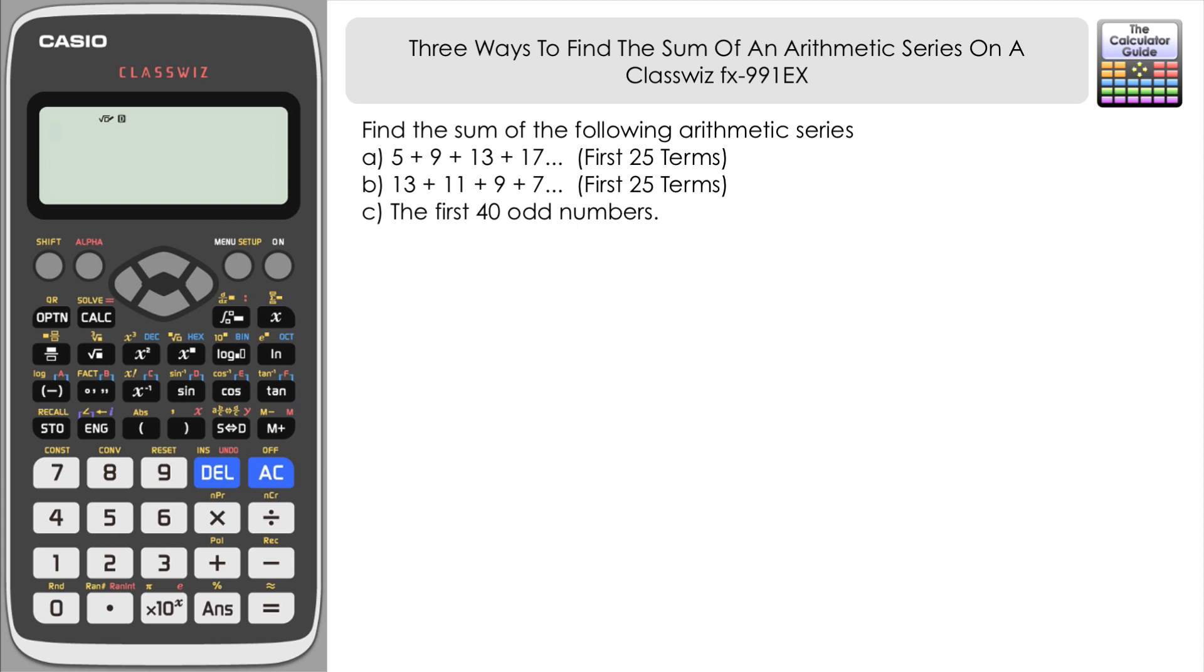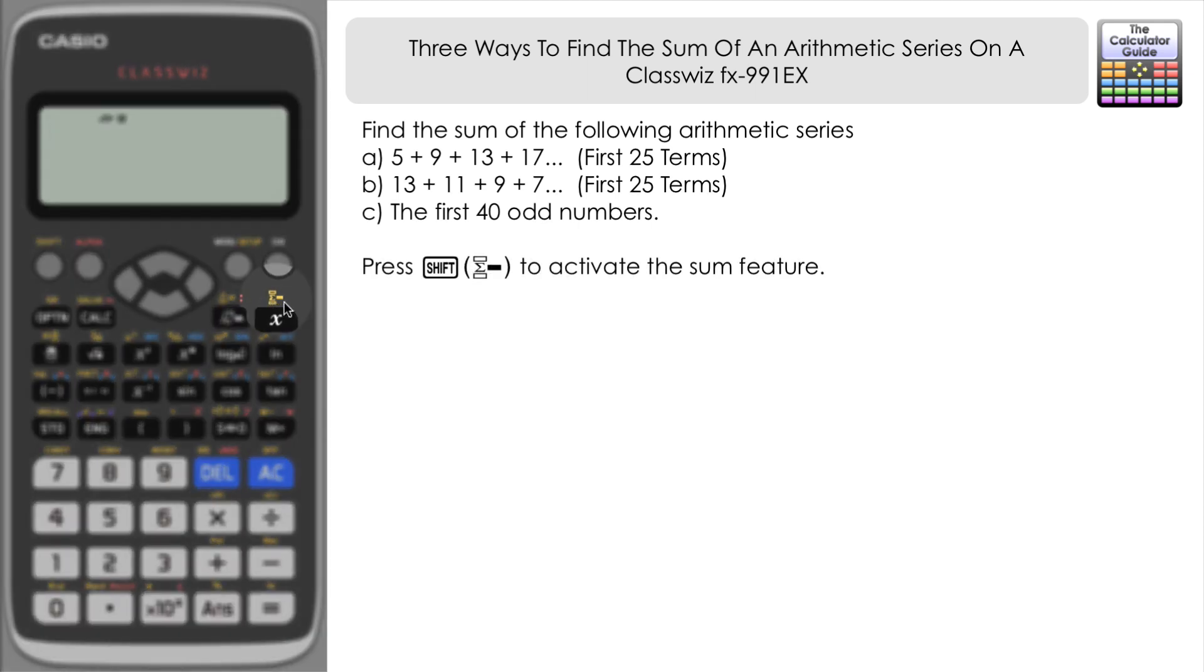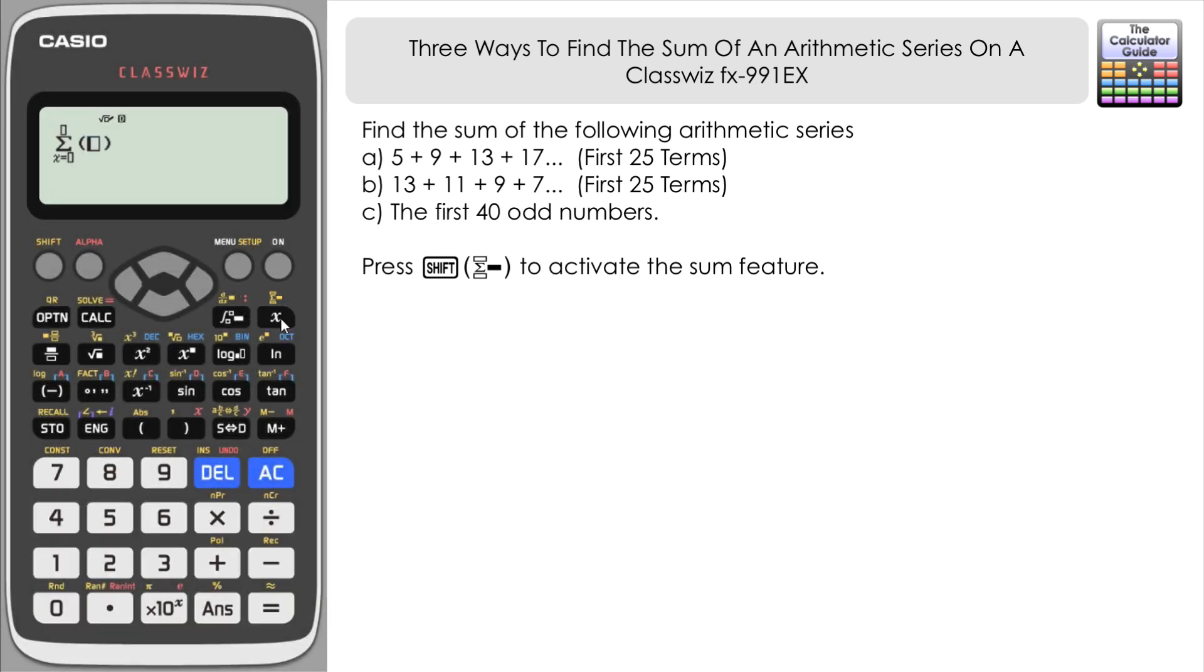For the first one, we're going to look for the equation of the nth term. I'll start by activating the sum feature on the Casio Classways - it's shift and this button here, and you can see we've got sigma notation there.